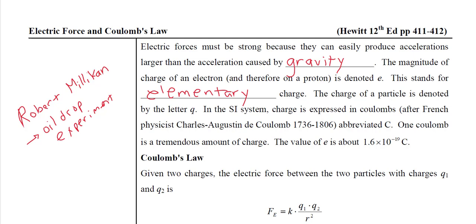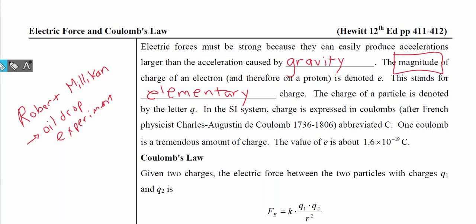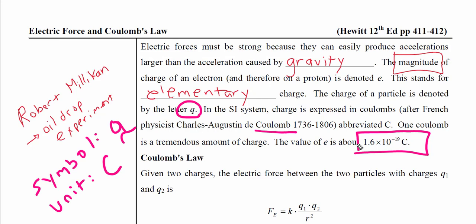The magnitude of the charge of an electron, the magnitude of a charge of an electron is going to be e. So if you see a lowercase e, that's what that represents. And we call this e the elementary charge. Now the elementary charge is going to be denoted by the lowercase q and the unit for it is the Coulomb. So the symbol for a charge is going to be lowercase q and the unit is going to be capital C for Coulomb. Do not confuse this with Celsius. It is a Coulomb.